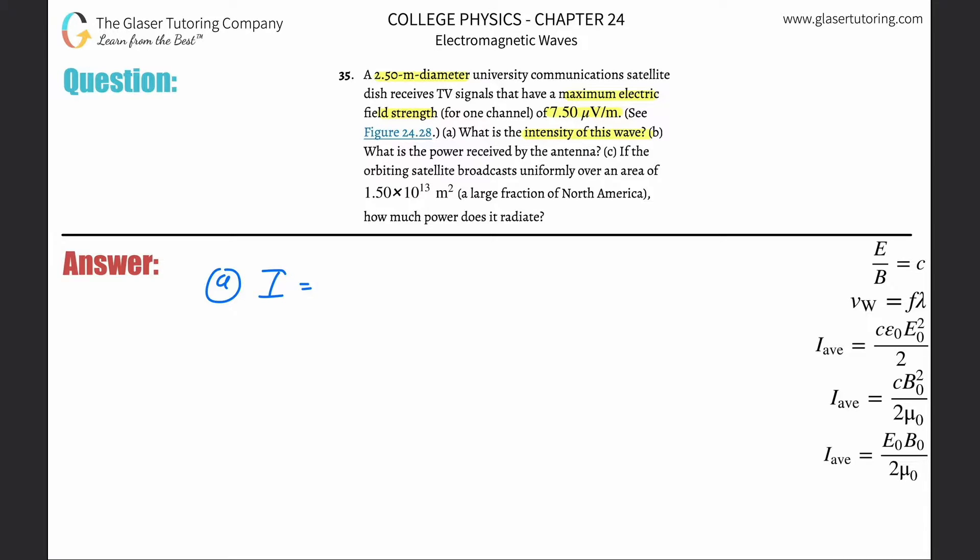Intensity equals the speed of light multiplied by the permittivity of free space multiplied by the maximal electric field strength squared, all divided by two. So to find the intensity, all we got to do is plug in these values.